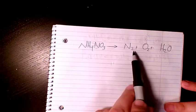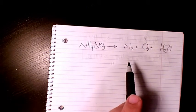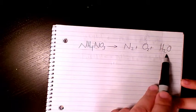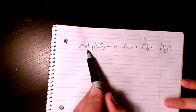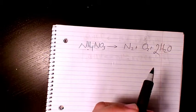We have one plus one which is two, and two here, so that's balanced for now. Hydrogen is two here, we have four here, so I make it two. So hydrogen is balanced now.